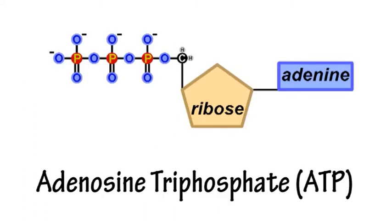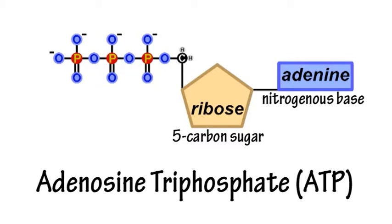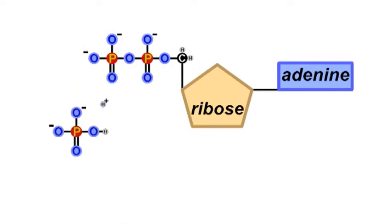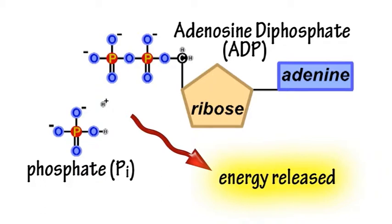ATP stands for the molecule adenosine triphosphate. It is a nucleotide made up of the five-carbon sugar ribose, with a base side chain adenine and a triphosphate group attached. The relatively high energy required to counteract repulsive forces between negatively charged phosphate groups means that ATP can lose the terminal phosphate group to form ADP, releasing energy that cells utilize.